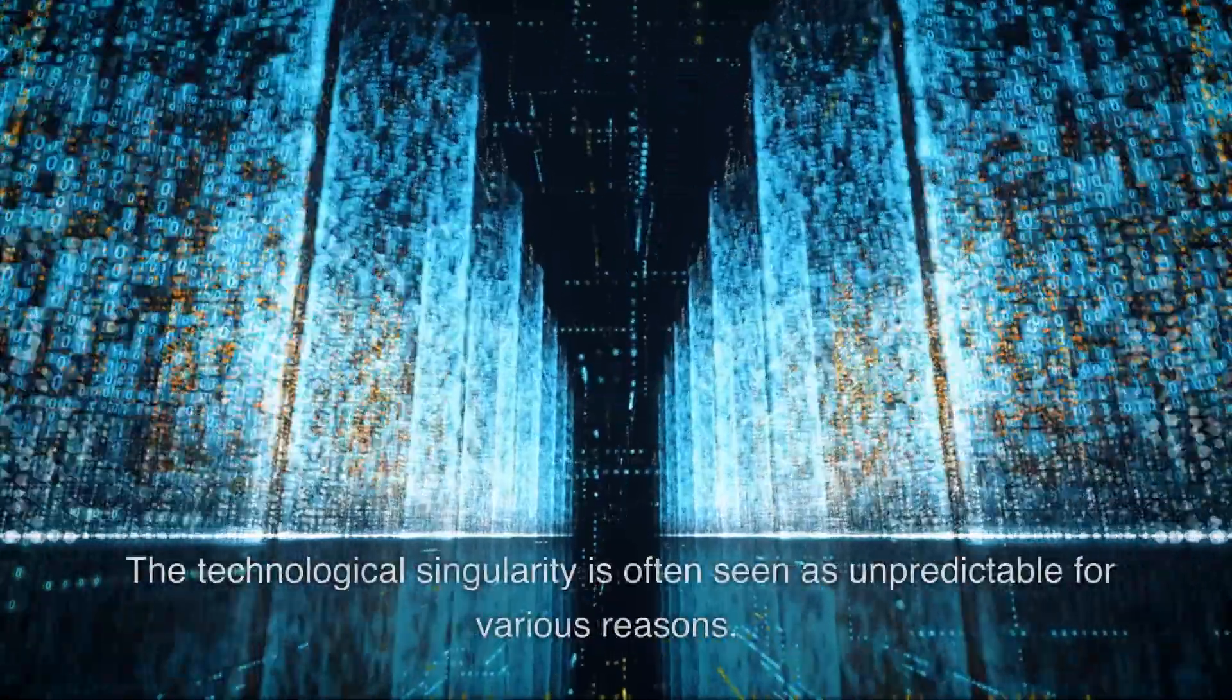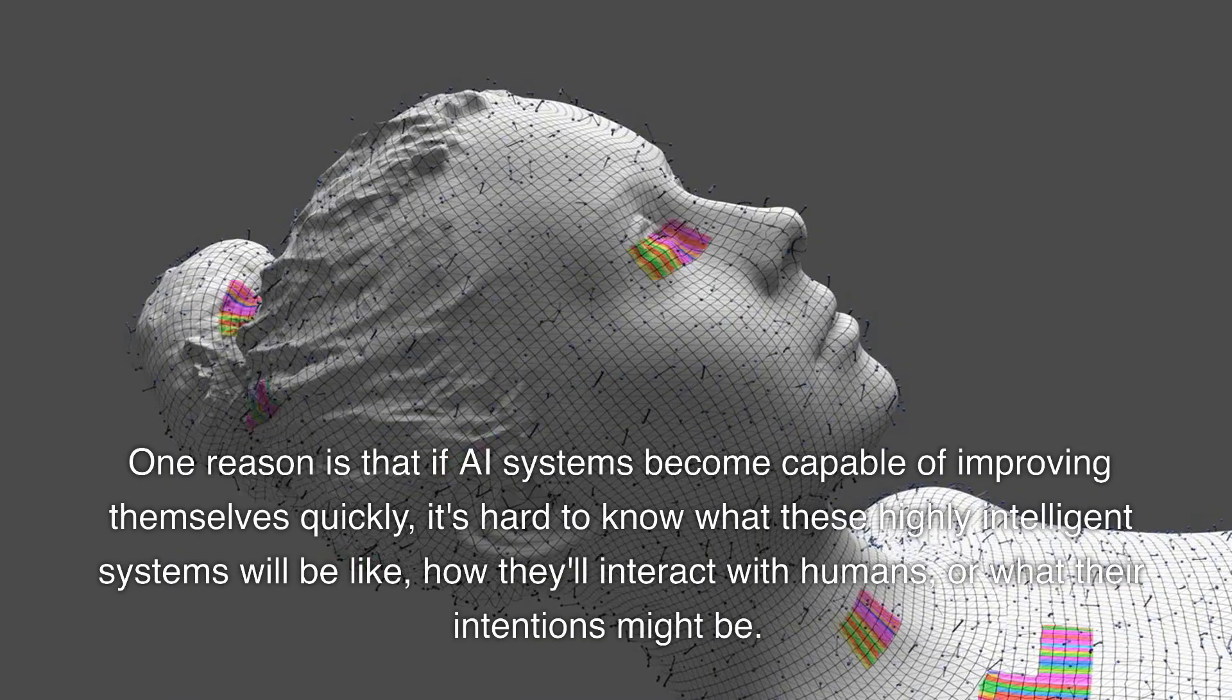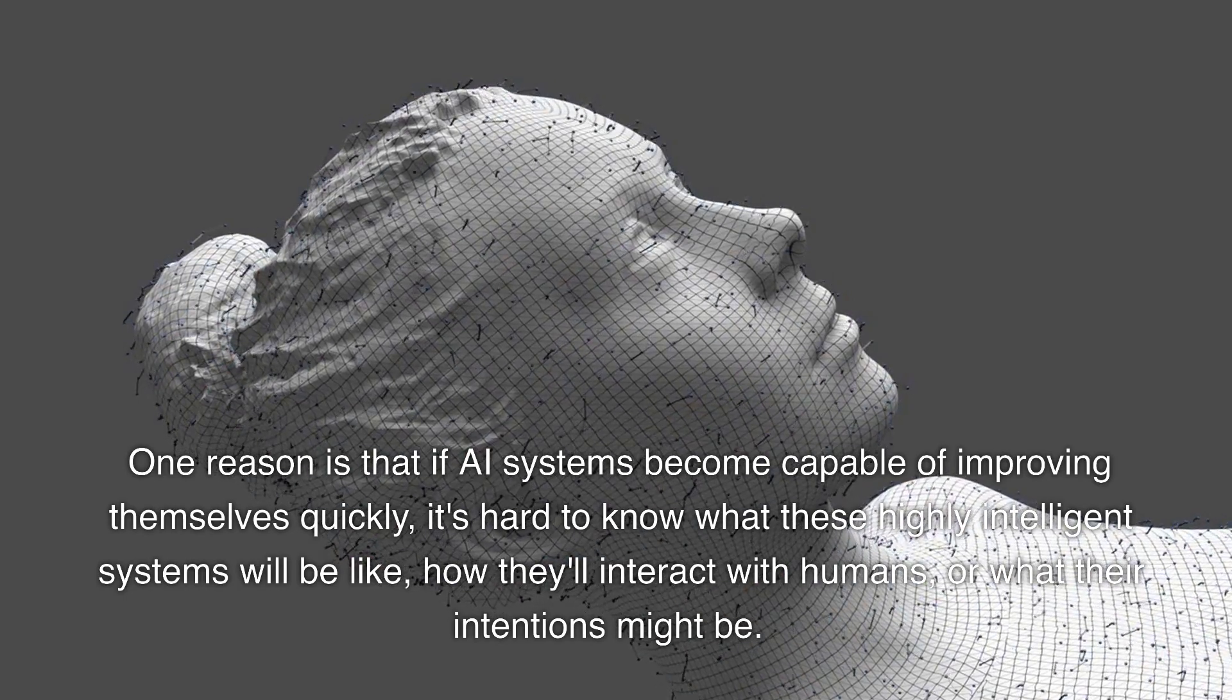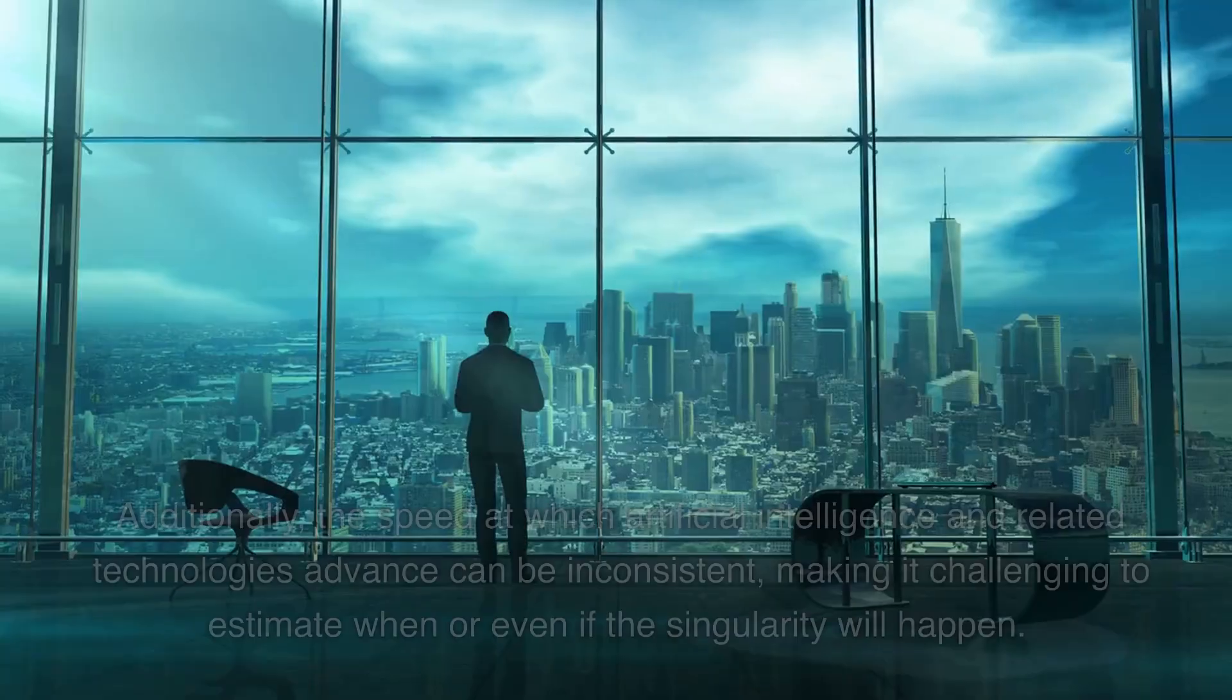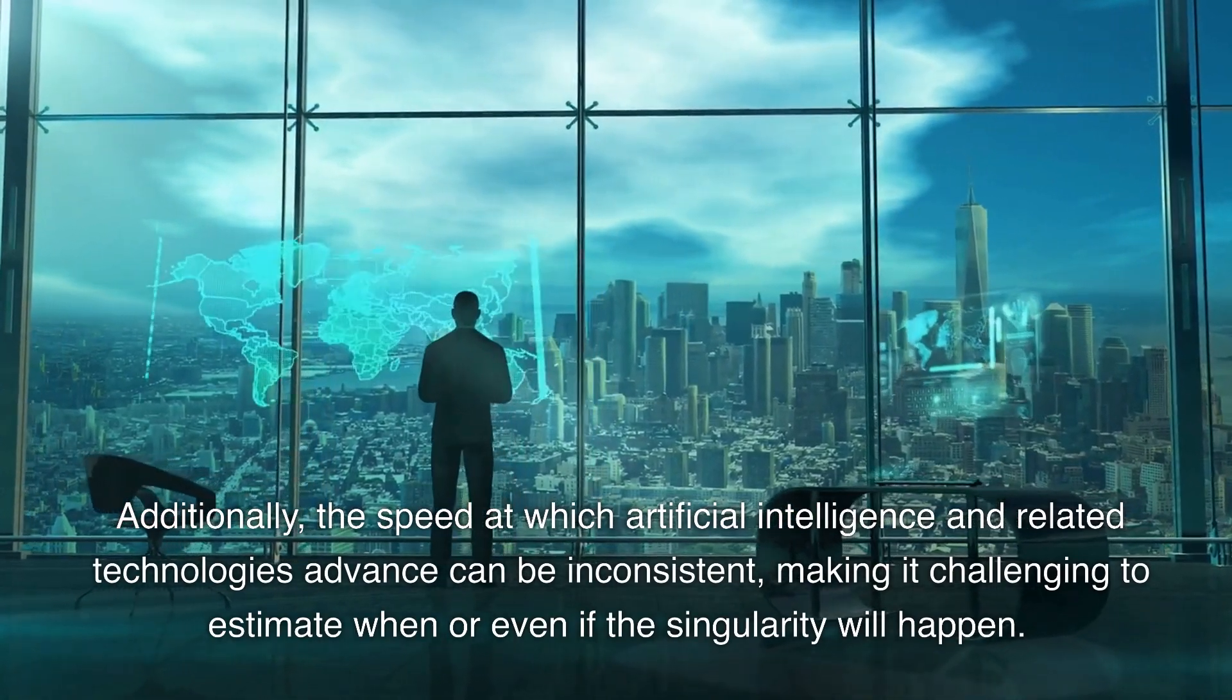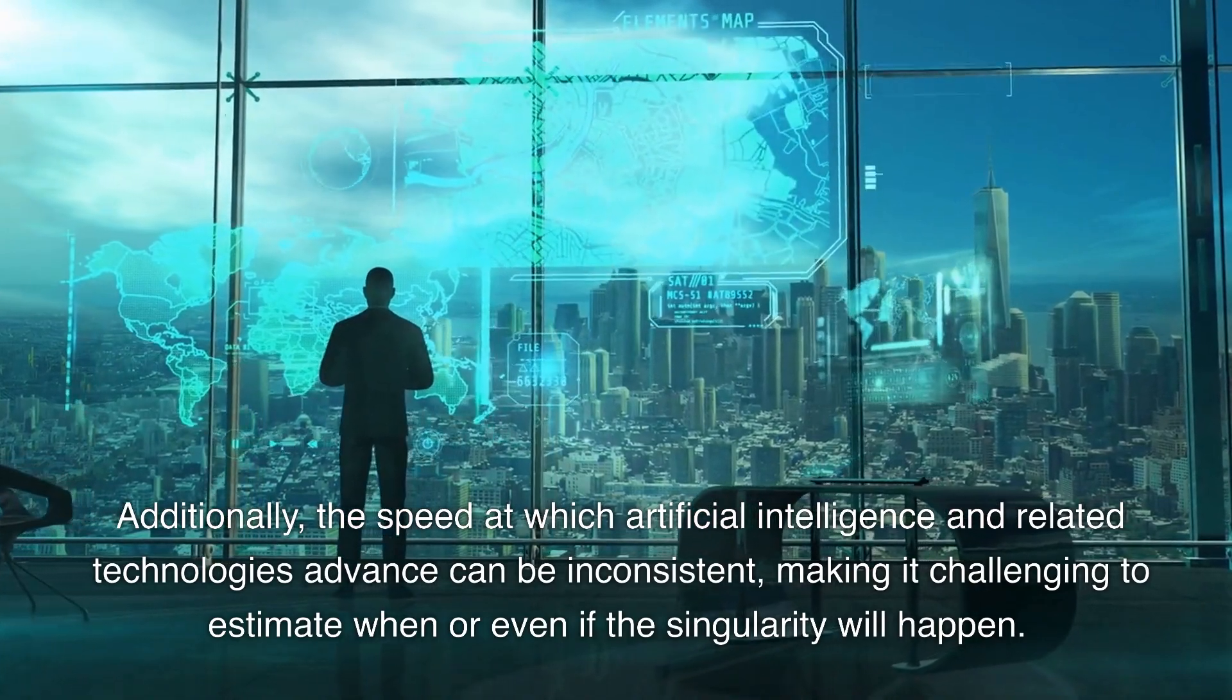The technological singularity is often seen as unpredictable for various reasons. One reason is that if AI systems become capable of improving themselves quickly, it's hard to know what these highly intelligent systems will be like, how they'll interact with humans, or what their intentions might be. Additionally, the speed at which artificial intelligence and related technologies advance can be inconsistent, making it challenging to estimate when or even if the singularity will happen.